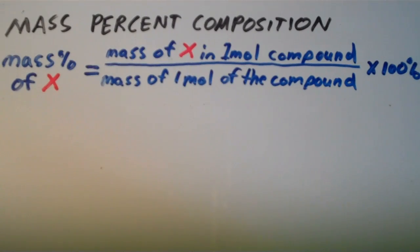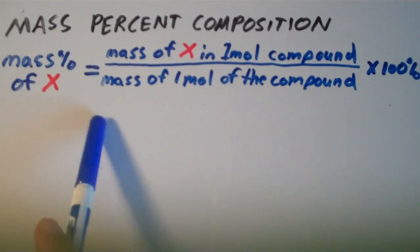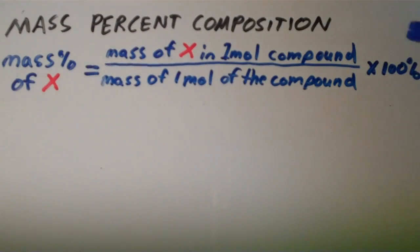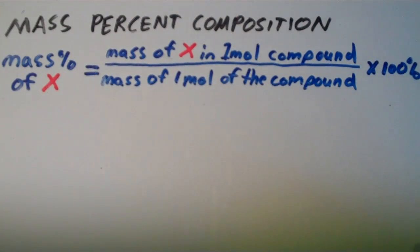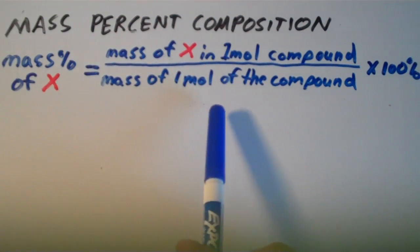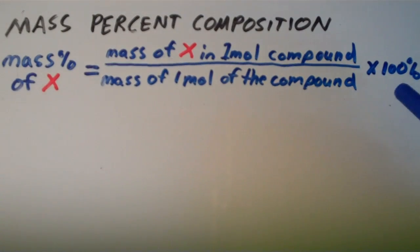In this video I'm going to go over mass percent composition. To calculate the mass percent composition, or simply the mass percent, of a generic element x, you take the mass of x that's in one mole of the compound and divide that by the mass of one mole of the entire compound. Then you multiply by 100% to express it as a percentage.